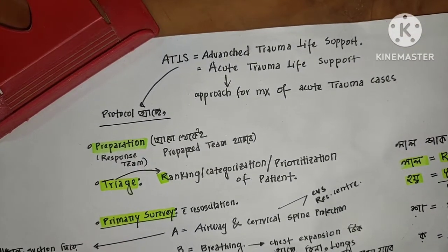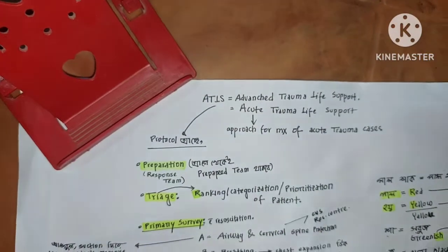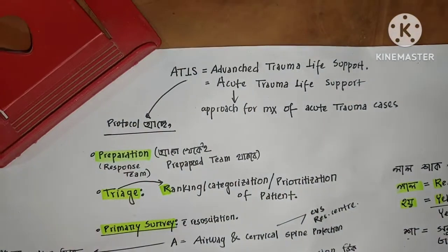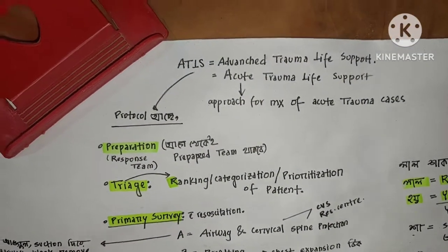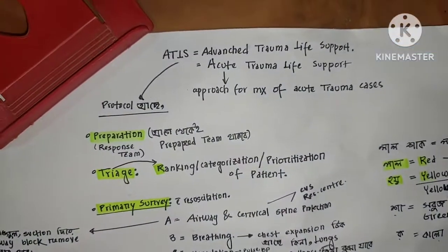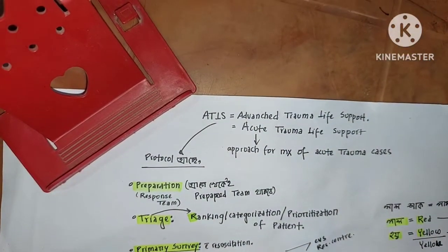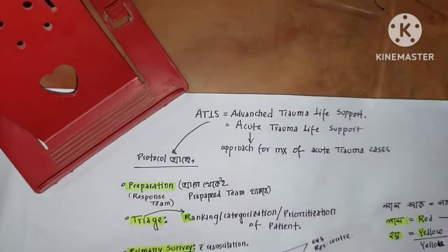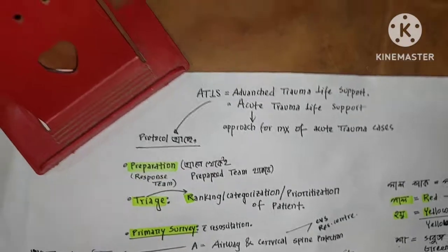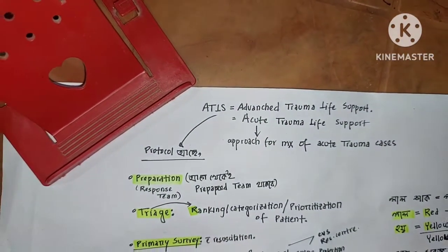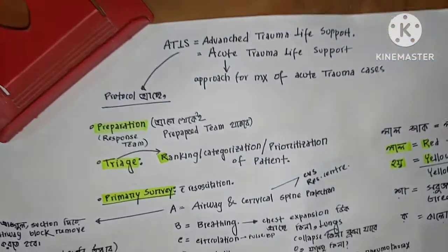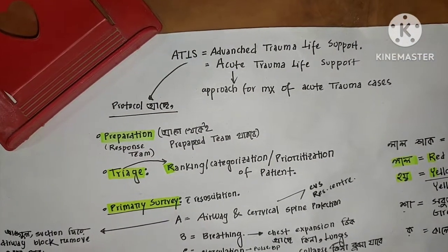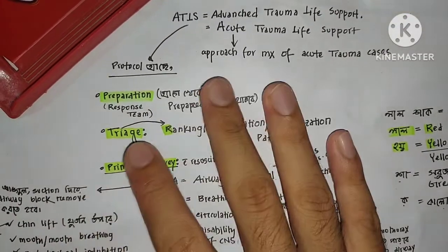This is a historical background. In 1970, Dr. James, who was an orthopedic surgeon, was involved in a plane crash. The patient was in a condition where there were no adequate medical facilities available.